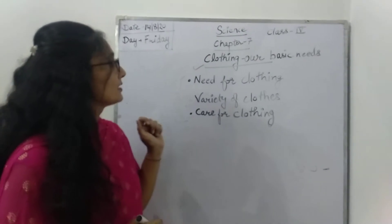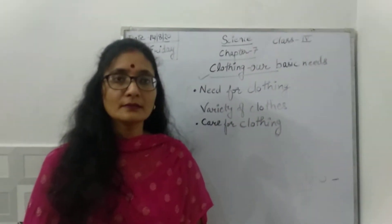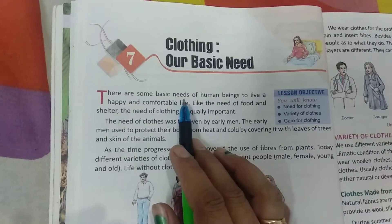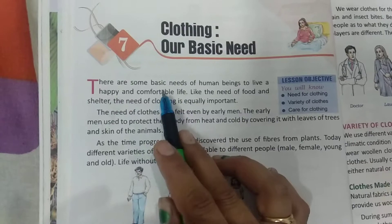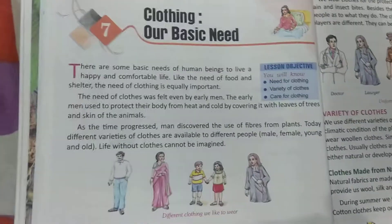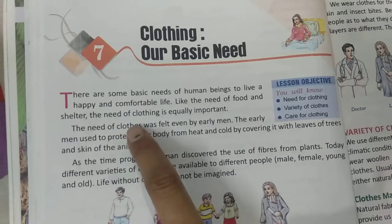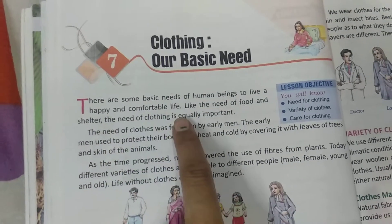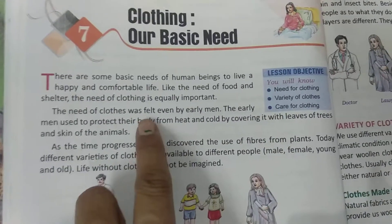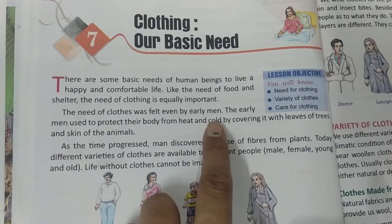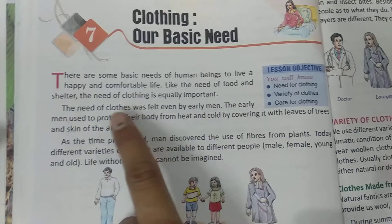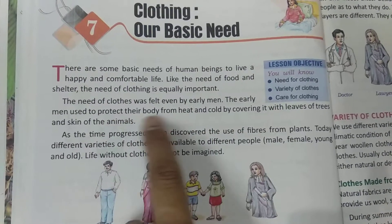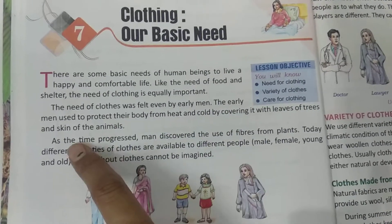So we will cover all these topics in this chapter. Let's start the reading of chapter 7. Here is your chapter — Clothing, our basic needs. There are some basic needs of human beings to live a happy and comfortable life, like the need of food and shelter; the need of clothing is equally important. The need of clothes was felt even by early men. When life started, early men had a need of clothes.